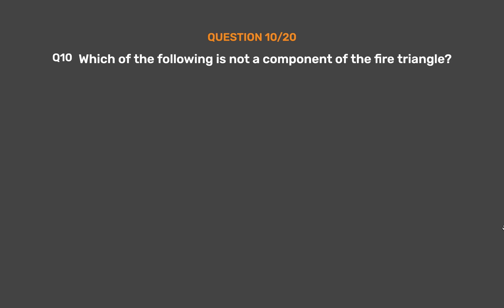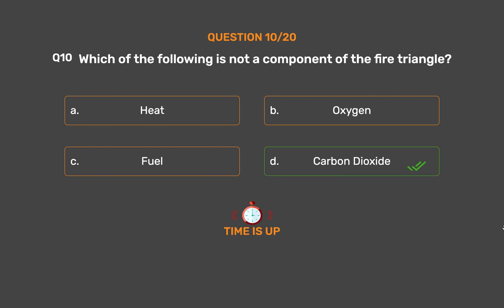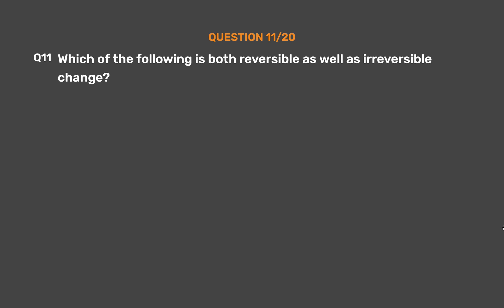Question number 10: Which of the following is not a component of the fire triangle? Option A: Heat. Option B: Oxygen. Option C: Fuel. Option D: Carbon dioxide. Burning is usually studied using the fire triangle. The fire triangle comprises three components: oxygen, fuel, and heat. These are the factors necessary for burning to take place and fire to grow. Carbon dioxide, on the other hand, helps in extinguishing the fire.